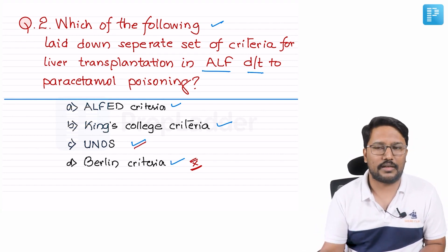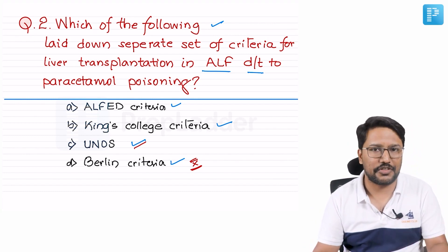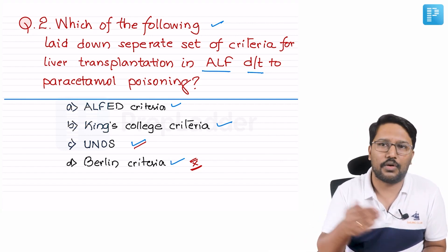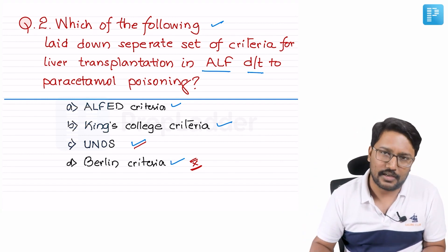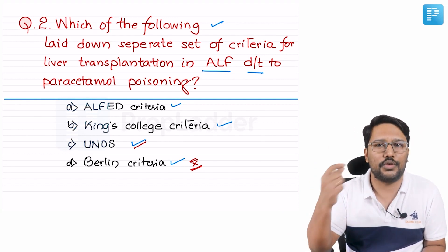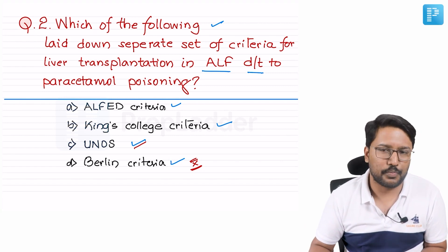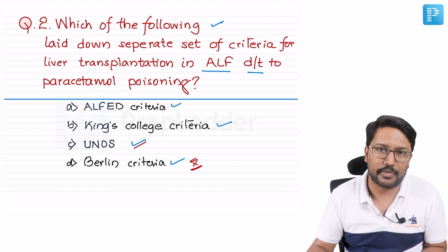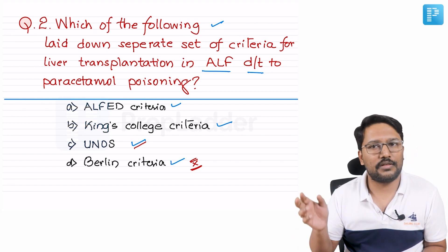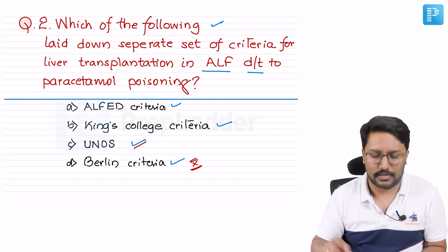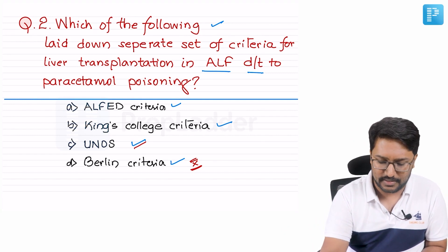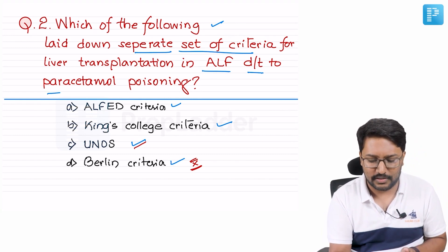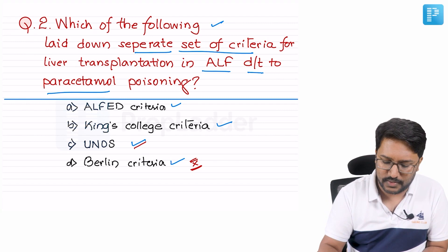Now, where do we hear about UNOS Criteria? I've done a video on liver transplantation where I mentioned that UNOS Criteria is basically about triaging and prioritization of recipients for liver transplantation. A classical example is acute liver failure in patients with Wilson disease — that is UNOS category 1. So UNOS is not a separate set of criteria specifically for paracetamol-induced ALF. These two options — Berlin and UNOS — we can rule out.